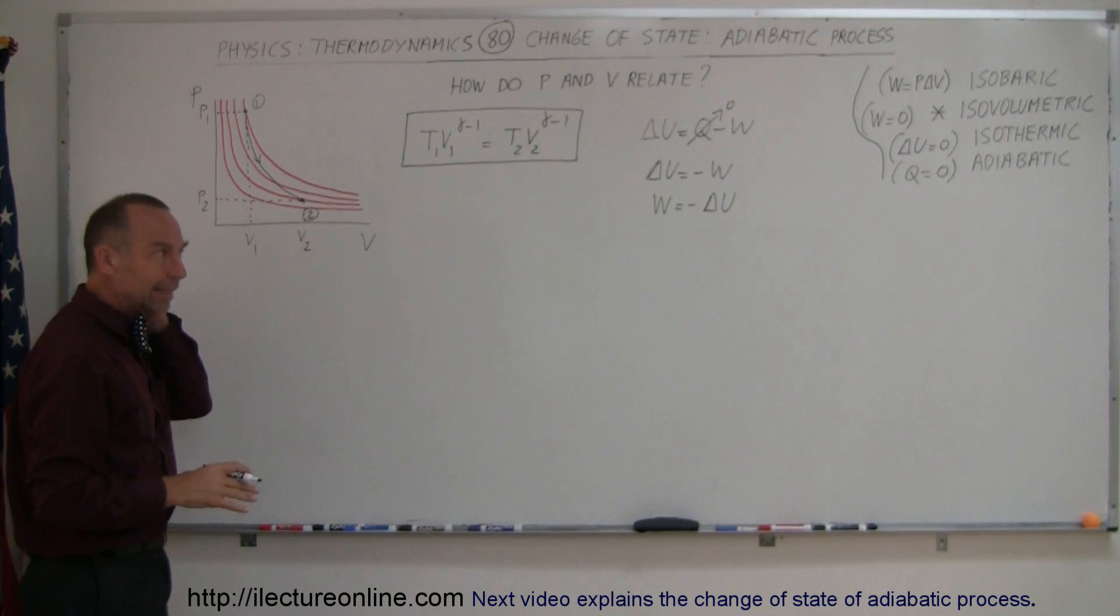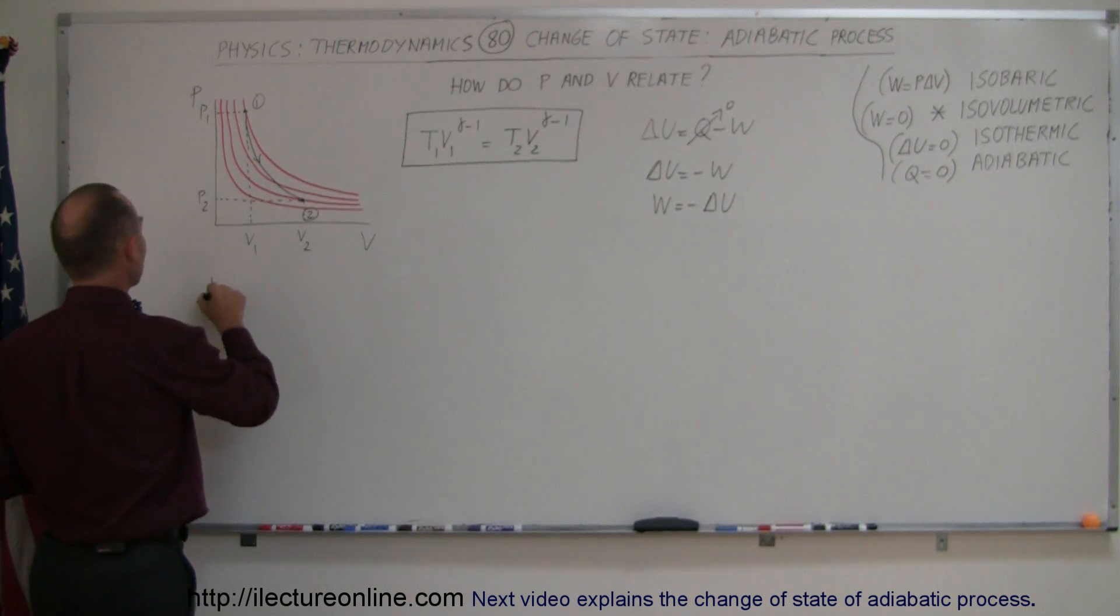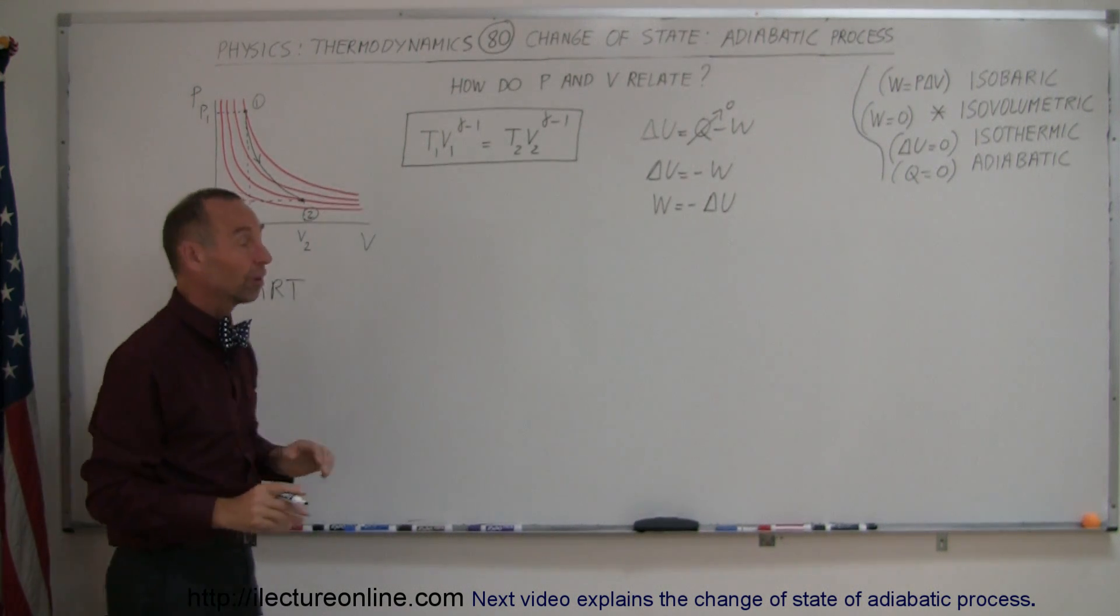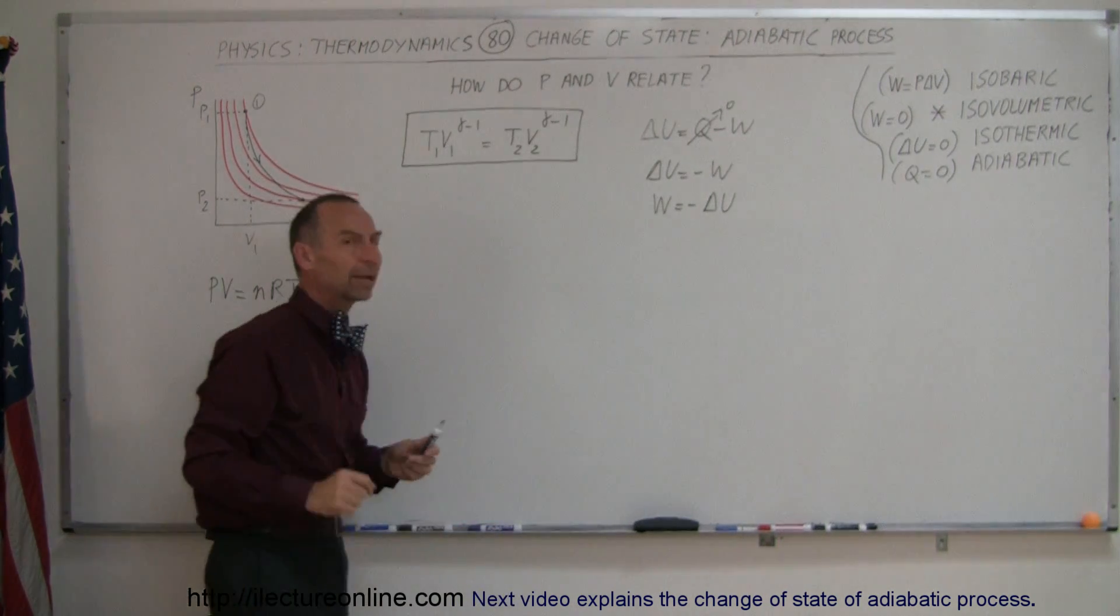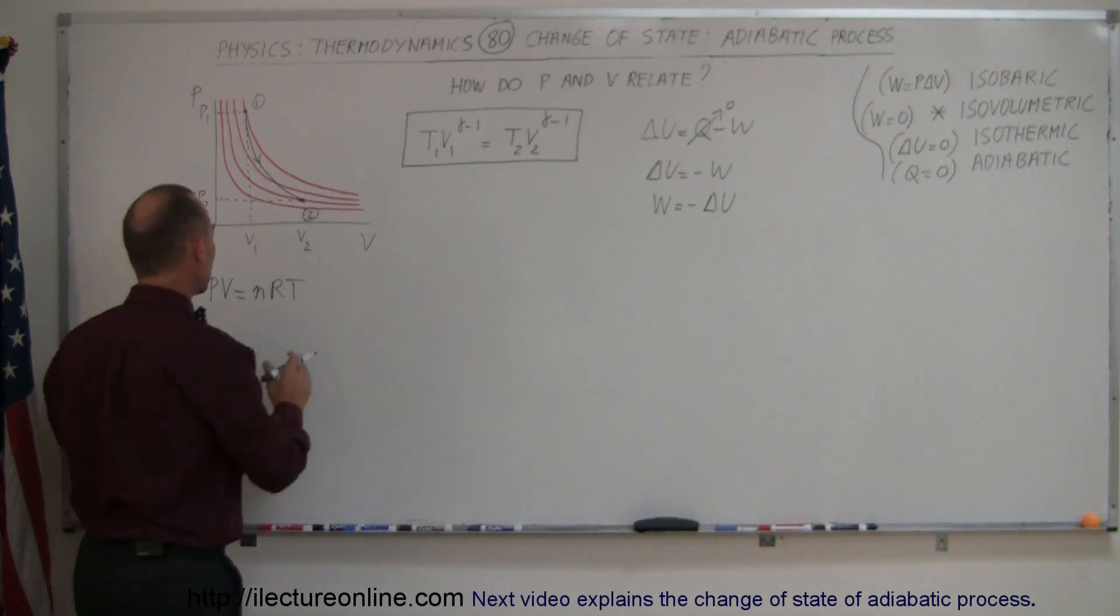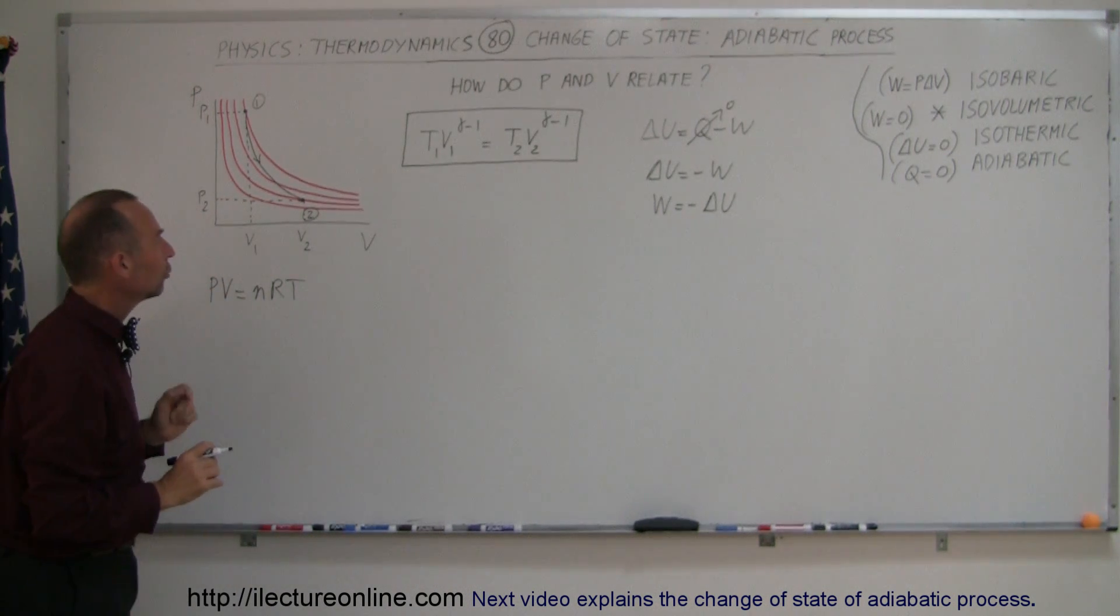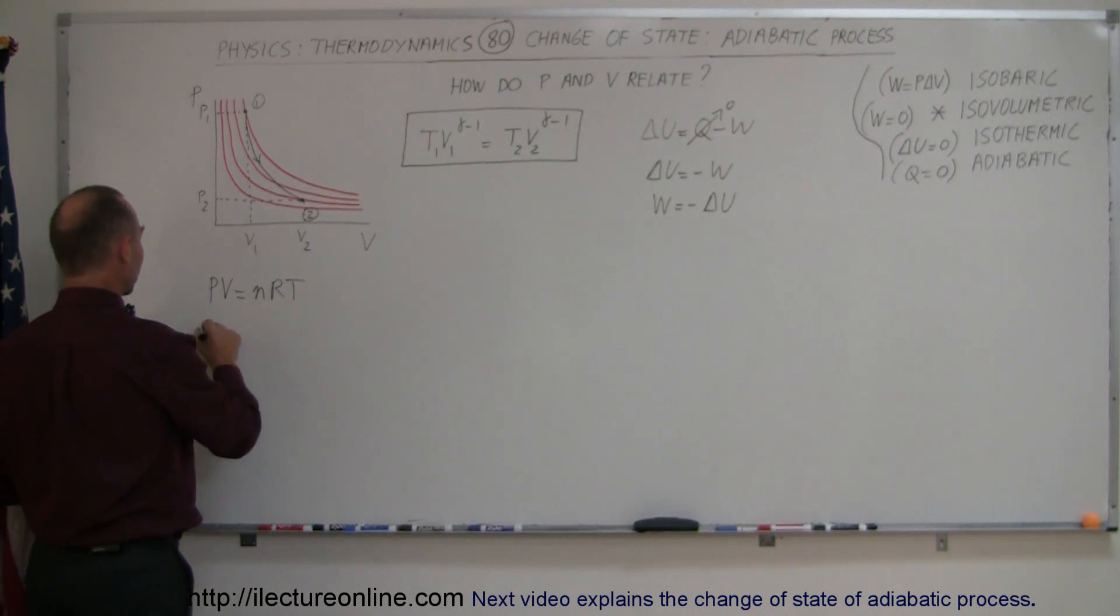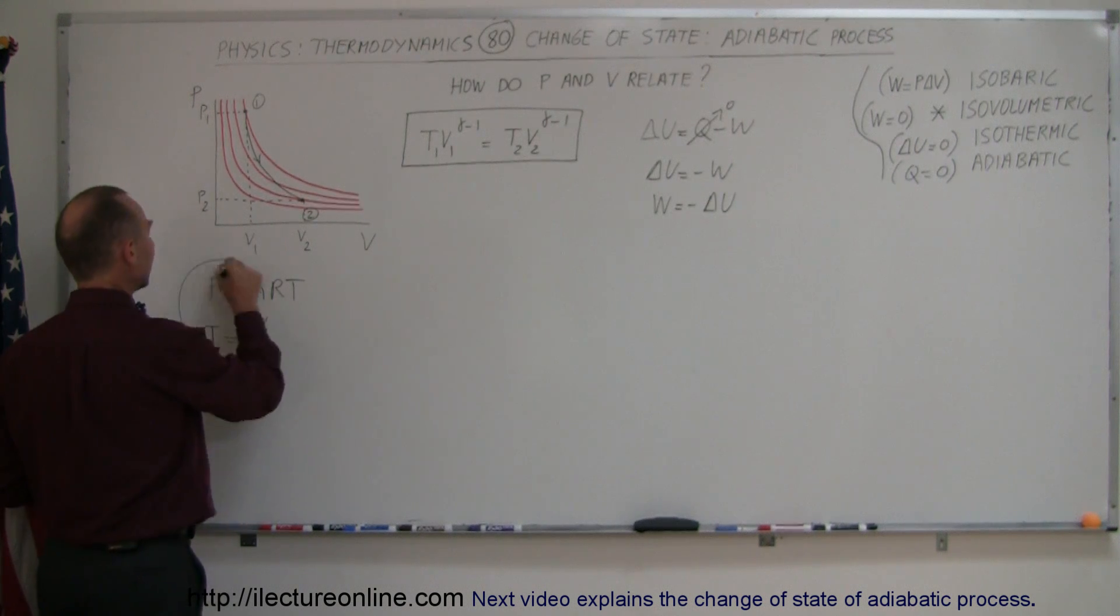Now by using that in the first law of thermodynamics and the gas equation PV equals NRT, we were able to come up with this relationship. But we should also be able to find the relationship between pressure and volume in an adiabatic process, so we're going to utilize this equation along with this. We're going to solve this equation for T, so T is equal to PV divided by NR and plug that into our equation.